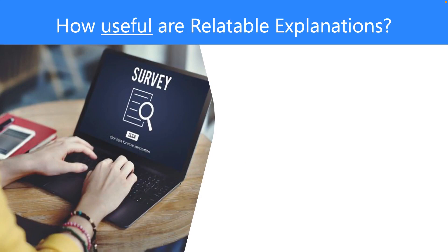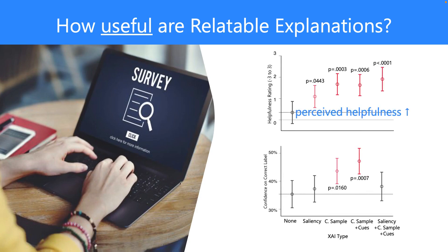We further conducted a between-subject experiment with 175 participants recruited from Amazon Mechanical Turk to explore how useful relatable explanations are. We found that all relatable explanations improve the perceived helpfulness compared with the baseline, and some explanations lead to improved decision correctness. Surprisingly, combining all explanations together reduces the benefits on decision correctness, probably due to weaker coherence between explanations.